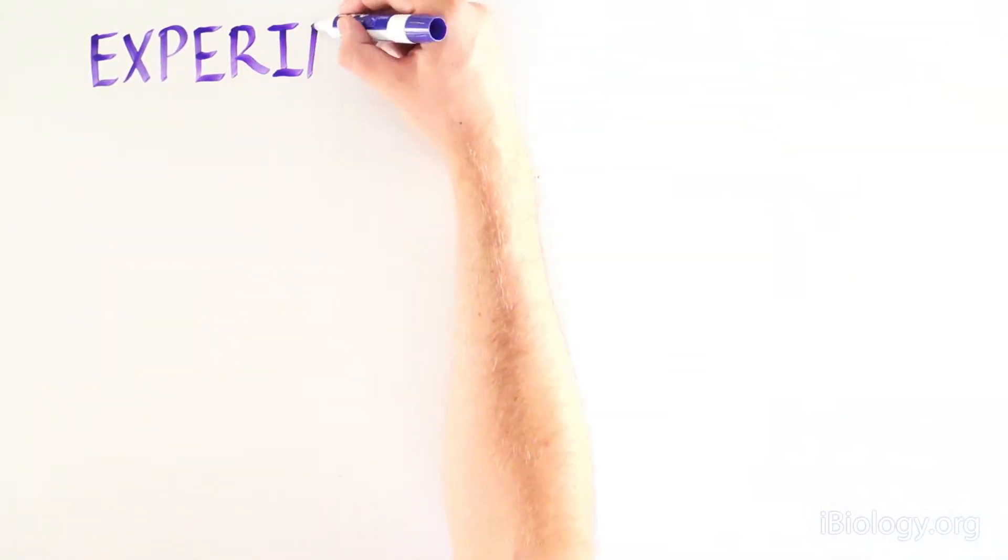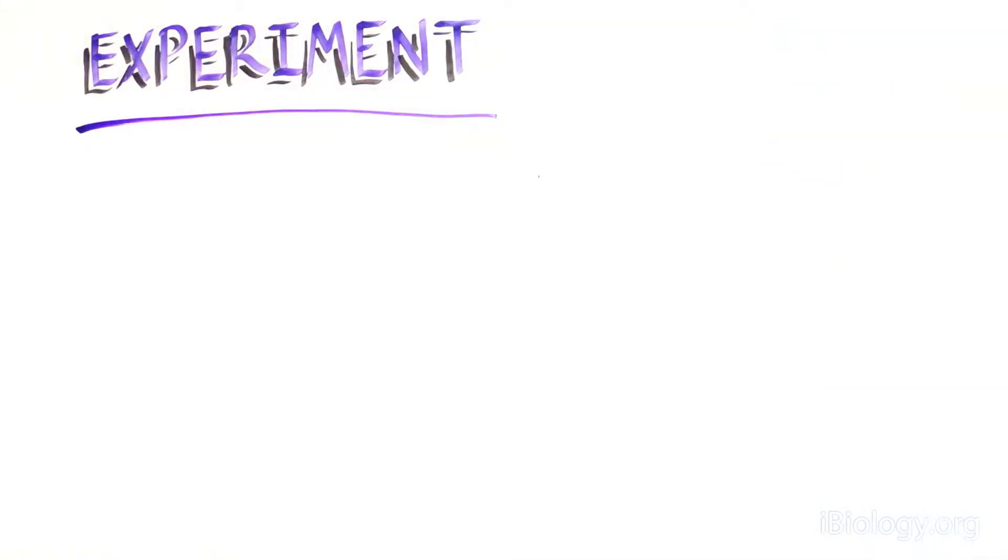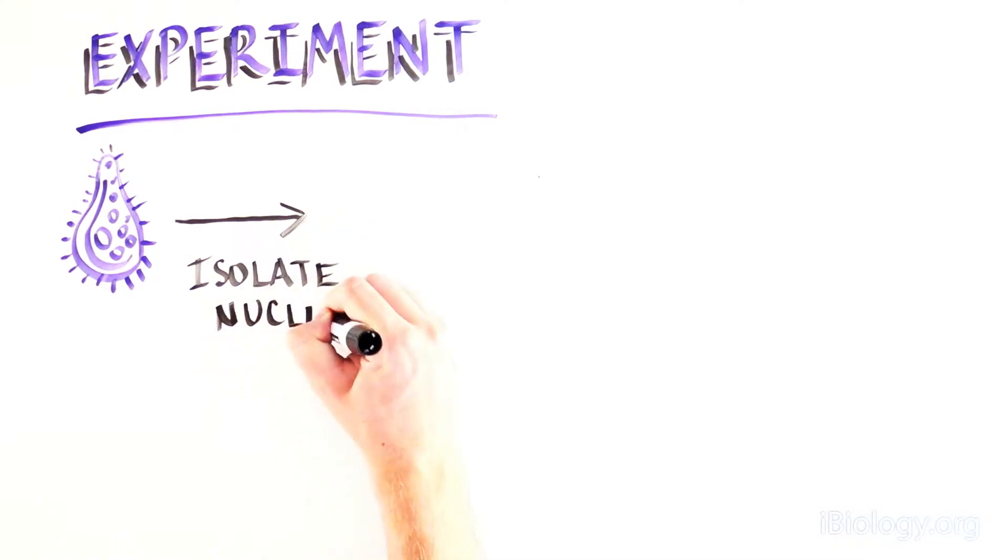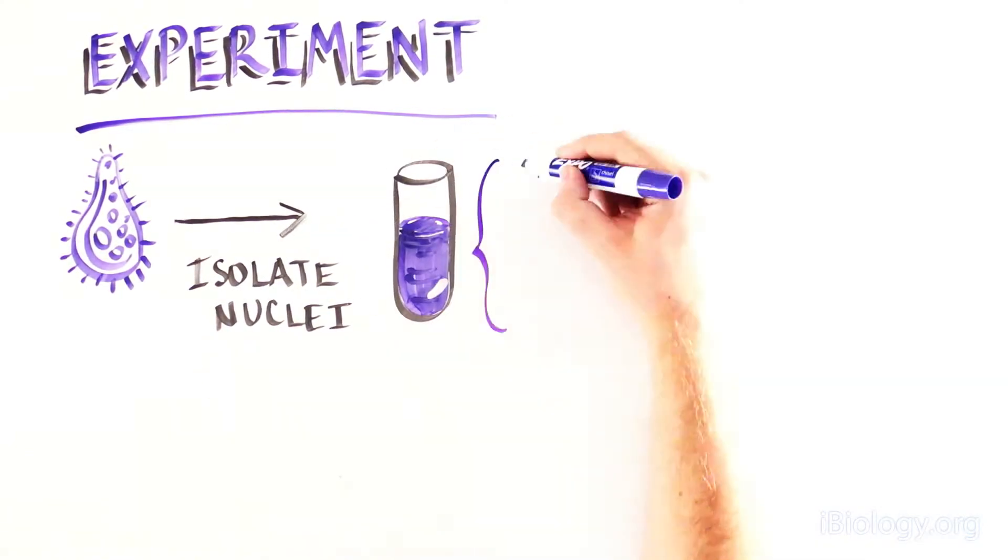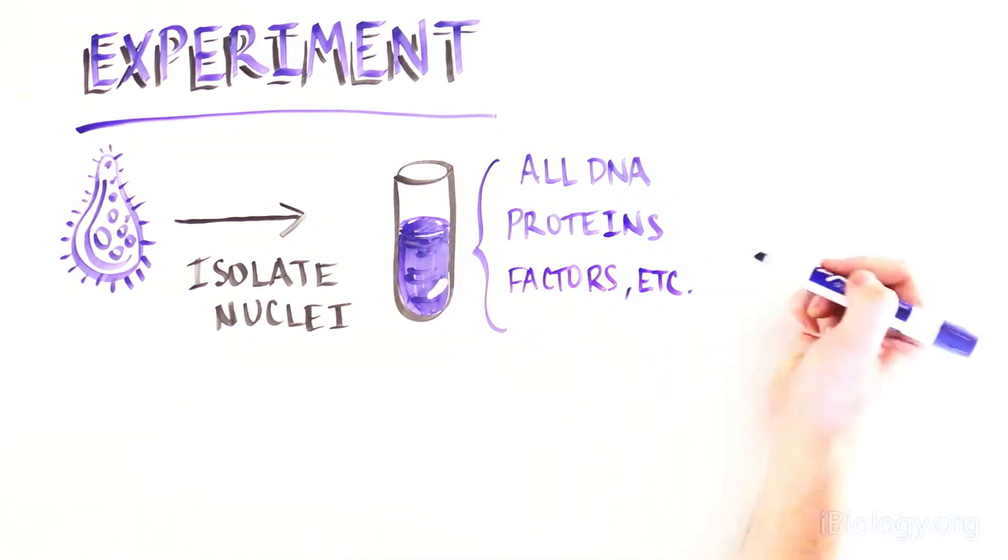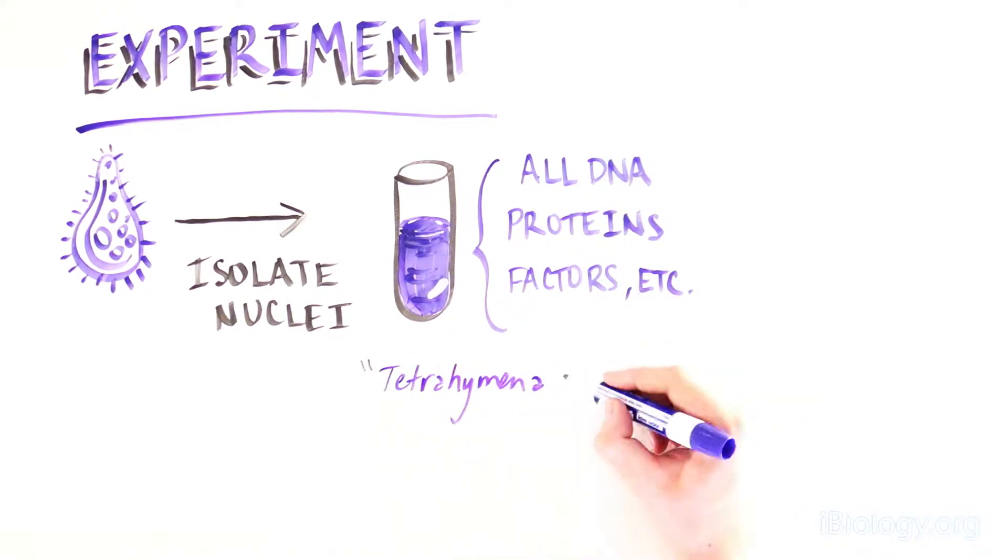Specifically, these scientists wanted to find out if there was a factor that added telomeres onto DNA in tetrahymena nuclei. These scientists isolated the nuclei of tetrahymena, which contains all of the DNA and lots of other proteins and factors. We'll call this the tetrahymena extract.